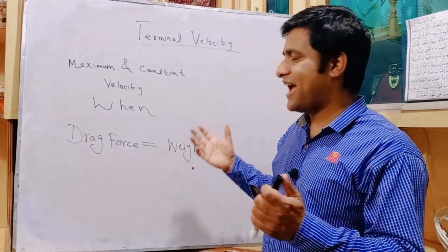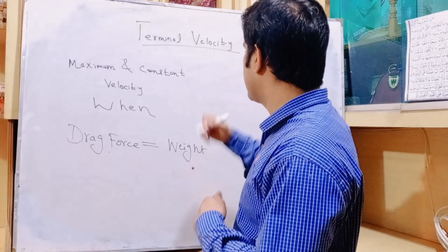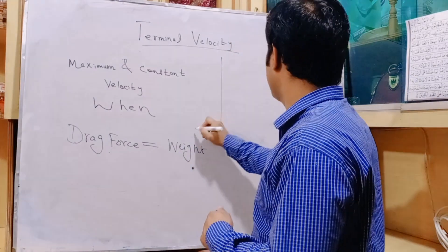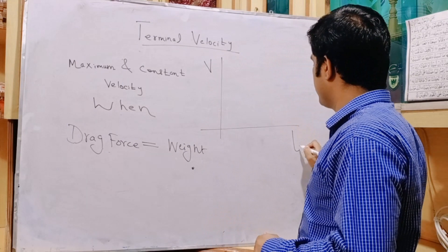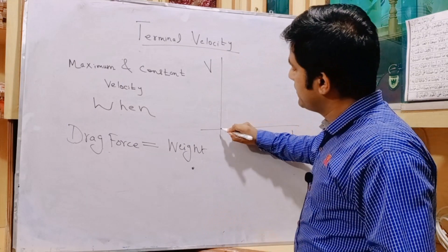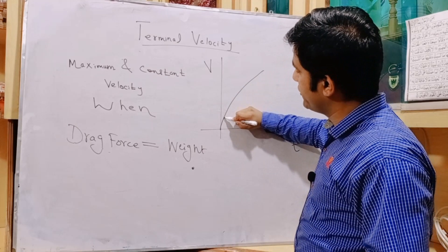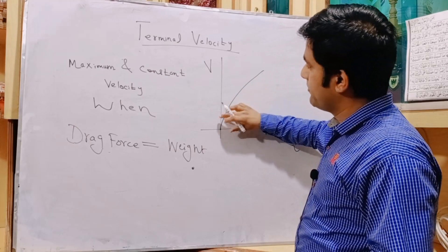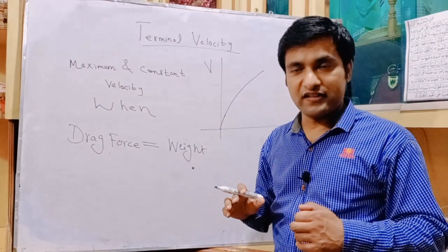We can take an example of a paratrooper. As he jumps out of the plane, he falls with a large acceleration and his velocity suddenly increases. He has a large acceleration here because he attains a sudden increase in velocity initially.